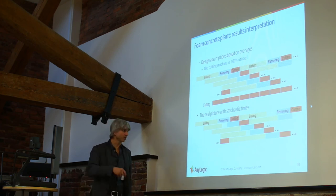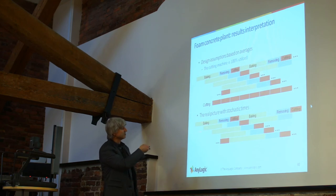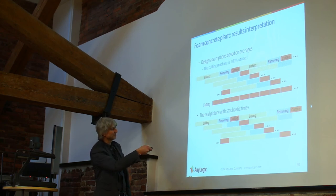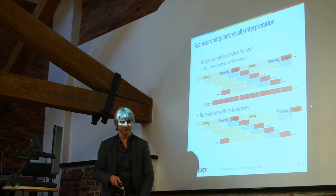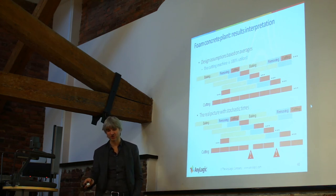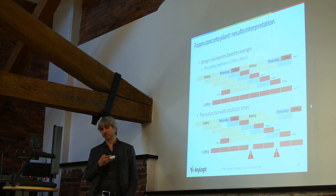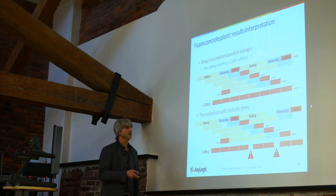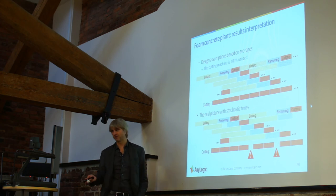In reality, the picture was different. Just because the baking time was stochastic and some other things were stochastic, the process was never as nicely aligned. There were inevitable gaps in when things were actually ready, and therefore the cutting line did have inevitable idle gaps in its operation. Basically, the outcome of this particular project was that the plant was not operating badly — it's just that the initial calculations of how it could operate were wrong. That was a satisfactory result for whoever managed the plant.